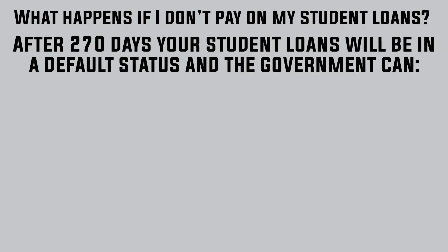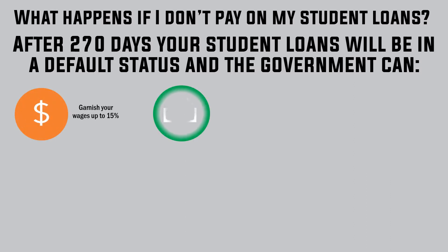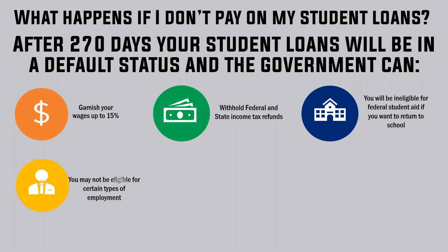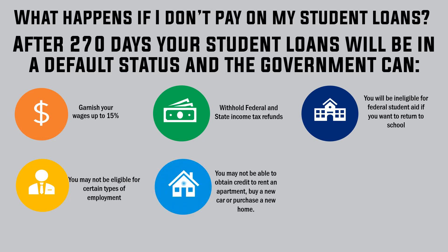What happens if I don't pay on my student loans? After 270 days, your student loans will be in a default status and the government can do several things. They can garnish your wages up to 15%, withhold federal and state income tax refunds. You will be ineligible for federal student aid if you want to return to school. You may not be eligible for certain types of employment, and you may not be able to obtain credit to rent an apartment, buy a new car, or purchase a new home.